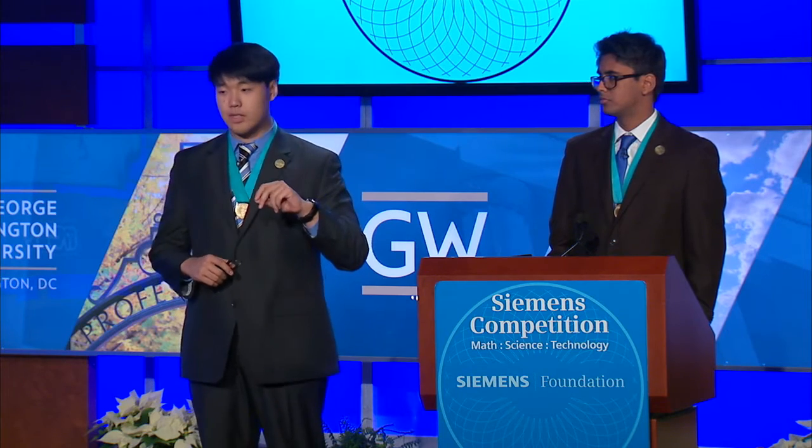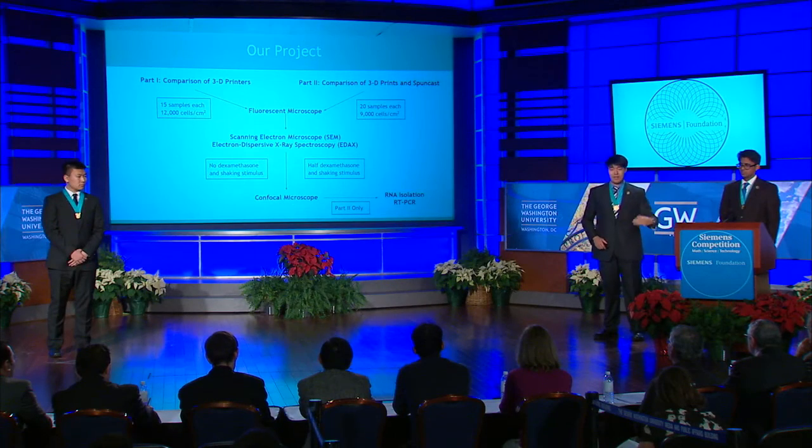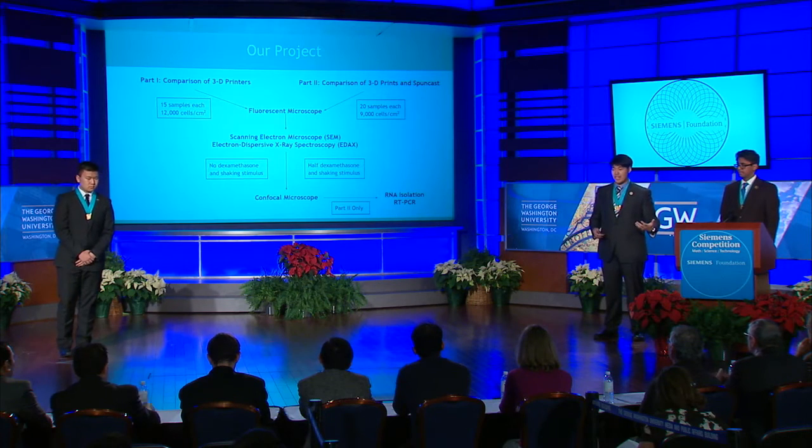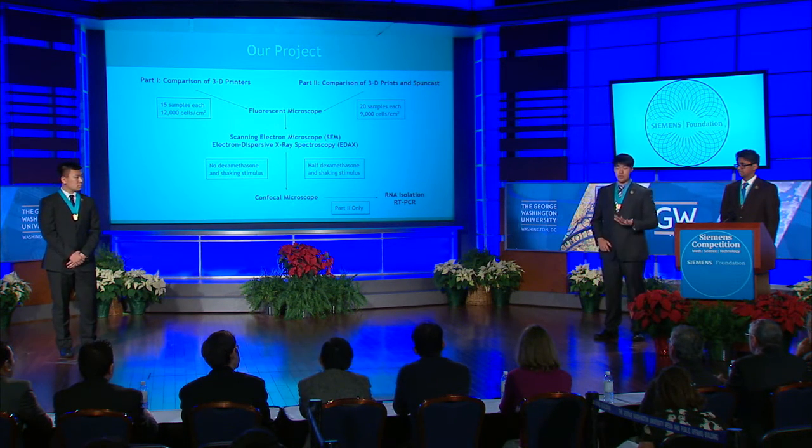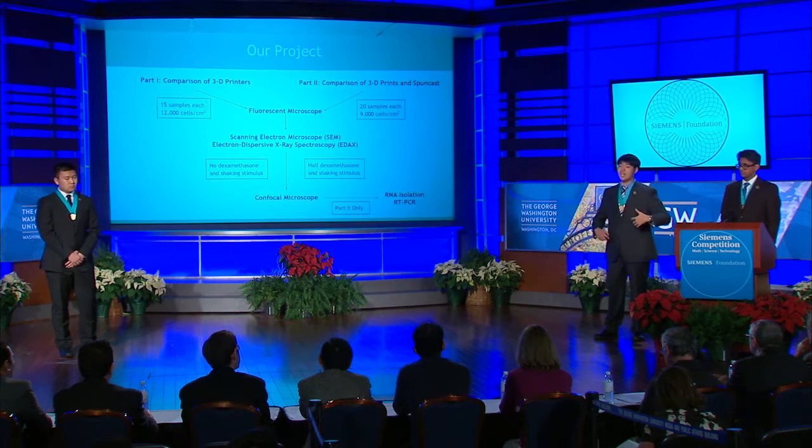The second part of our project was a comparison of 3D printed structures and spun cast structures. We created 20 rectangular 3D printed samples and 20 spun cast structures made by depositing PLA drops onto silicon wafers and spinning them at high velocity on a photo-resist spinner to create a perfectly flat surface. Cells were plated at a density of 9,000 cells per centimeter squared. Starting from day one, every other day, we replaced the media and imaged under the fluorescent microscope. On day three, we assessed surface topography and composition using SEM and EDAX. On day five, we introduced a positive control by adding dexamethasone to half of the samples, and also introduced a shaking stimulus by incubating half of the dexamethasone-treated and half of the untreated samples on a rocking shaker to simulate in vivo fluid motion of the body.